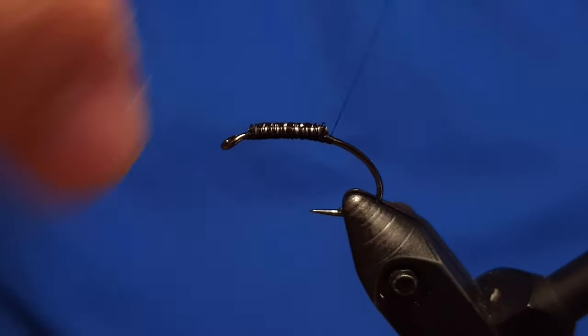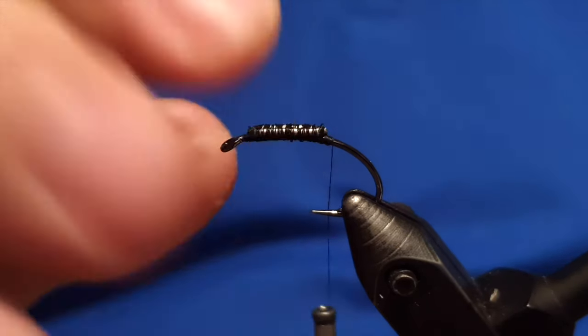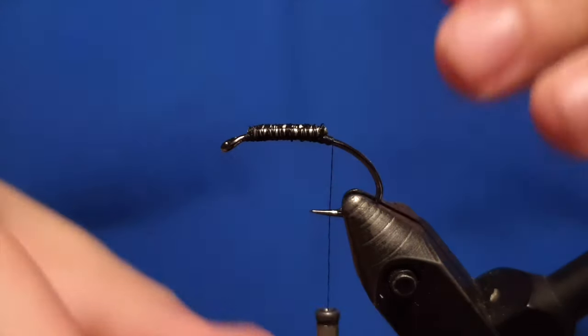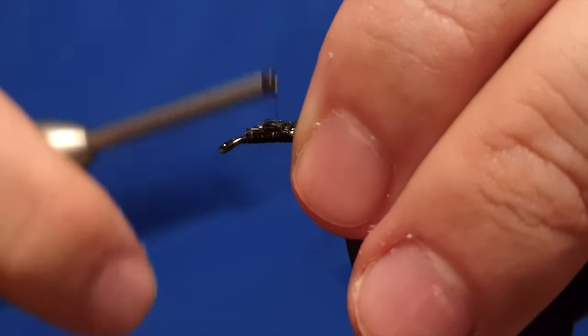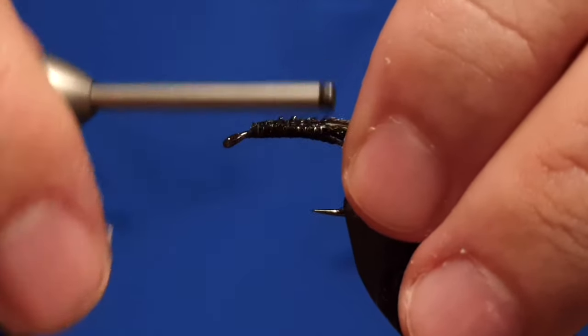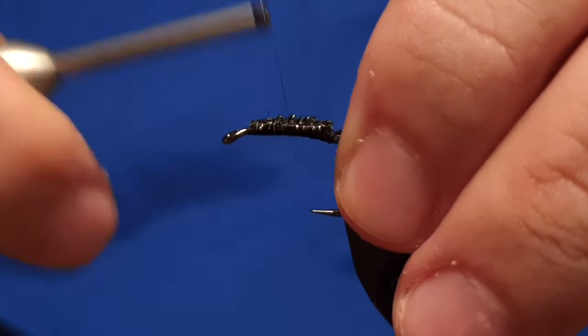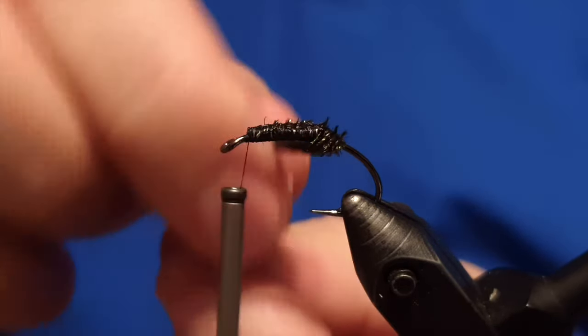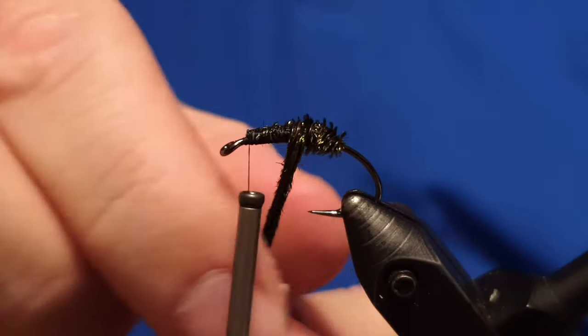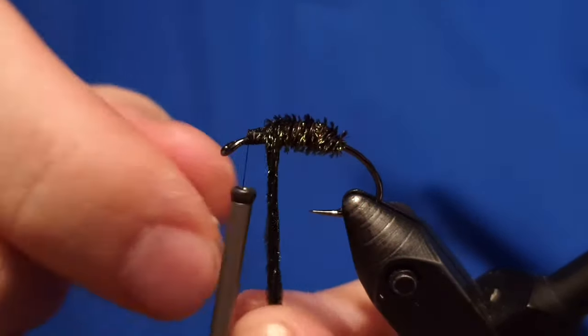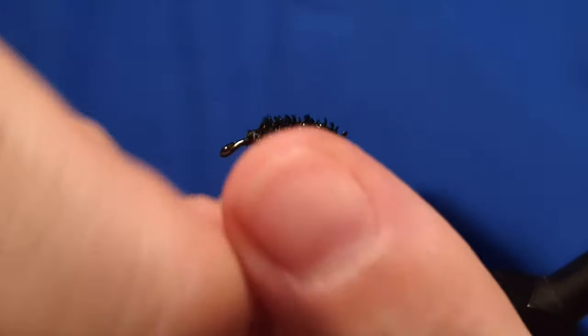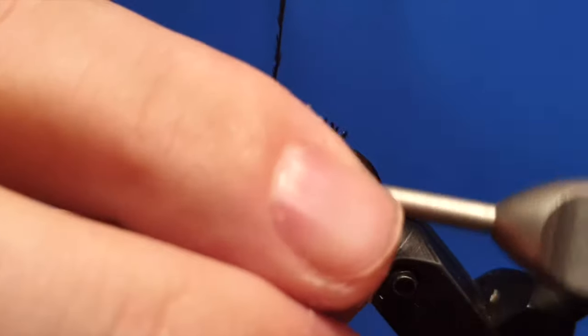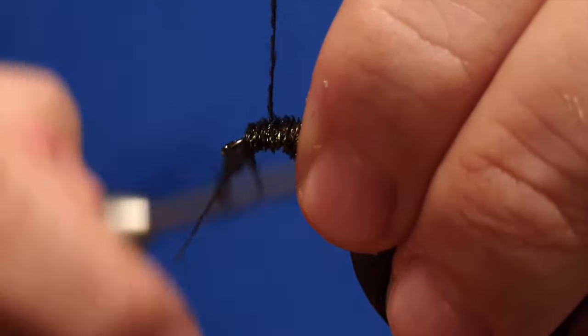Since this is a UV resin fly, or originally the name is epoxy pop—back in the days it's not a new fly, it's relatively old—it used to be made with epoxy. Five-minute epoxy has been replaced in the fly tying category with UV resin, as you may have noticed the last ten years or so.